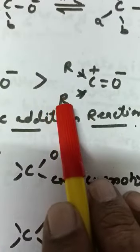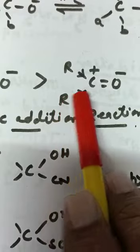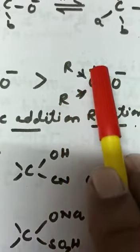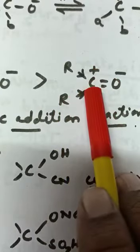In case of ketone, due to presence of two alkyl groups, by the plus-I effect or inductive effect, the magnitude of positive charge is reduced.